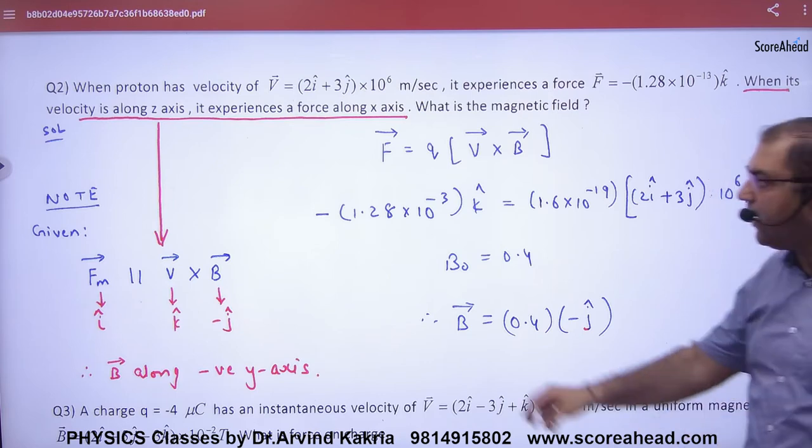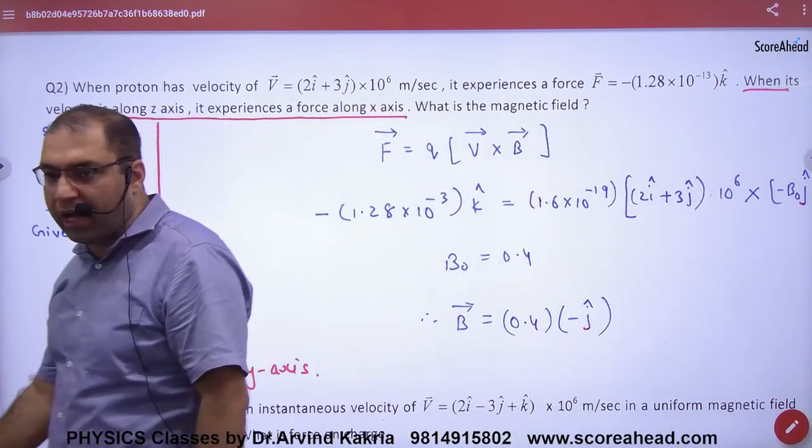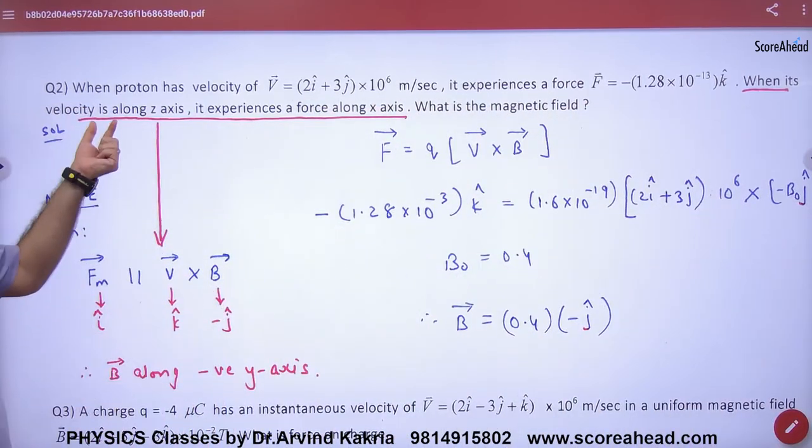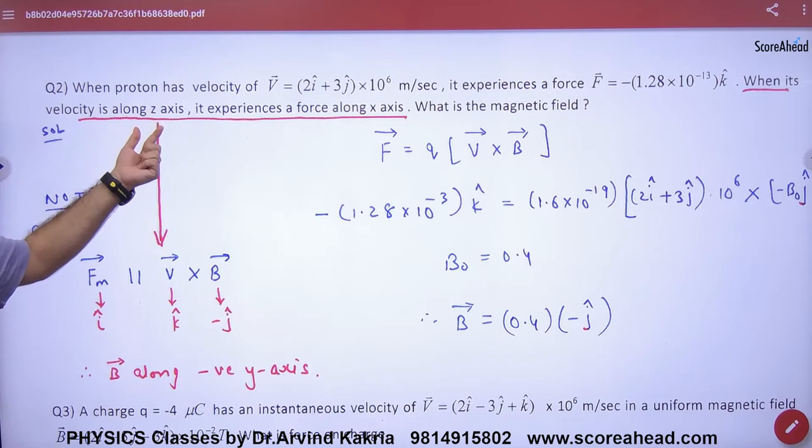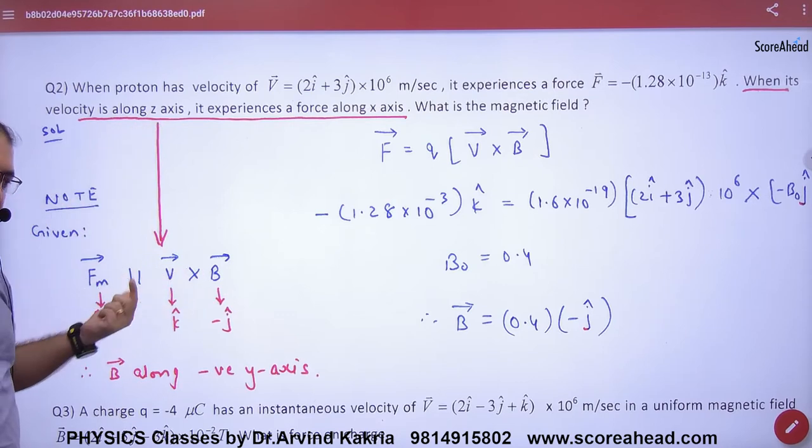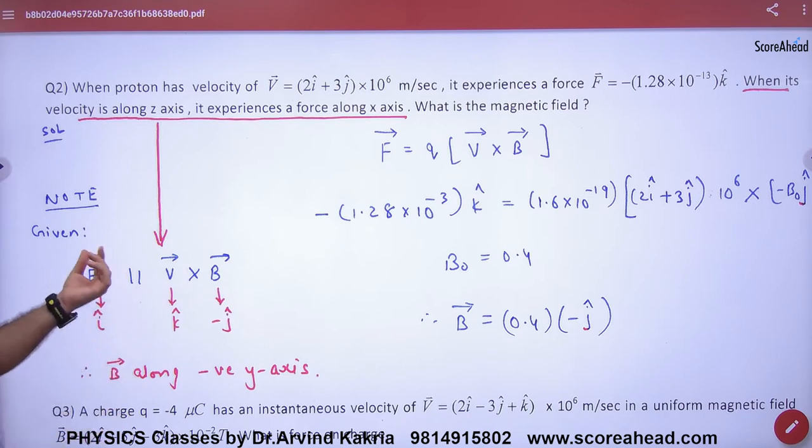For this, there is a line given. That if velocity is in Z axis. Now I know that the force vector is in V cross B. It is parallel to V cross B. The force vector is perpendicular to the cross product. So he is saying that if velocity is Z axis, it means that it is K cap. Force is X axis. So this is I cap.